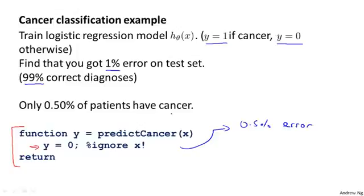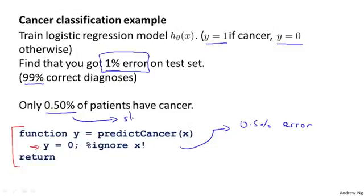That 0.5% error is even better than the 1% error we were getting, and this is a non-learning algorithm that just predicts y equals 0 all the time. When the ratio of positive to negative examples is very close to one of the two extremes — where the number of positive examples is much smaller than the number of negative examples because y equals 1 so rarely — this is what we call skewed classes. We just have a lot more examples from one class than the other, and by predicting y equals 0 all the time, an algorithm can do pretty well.